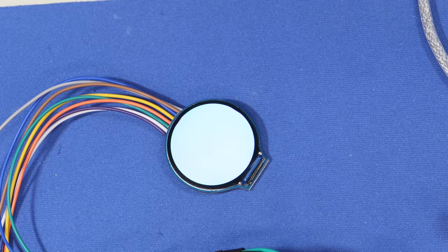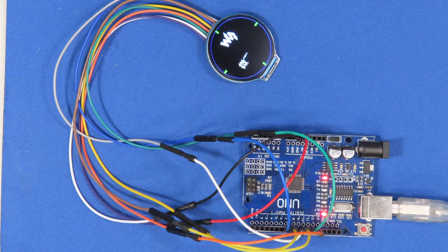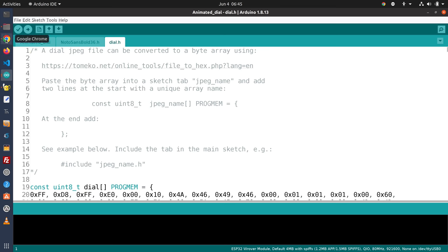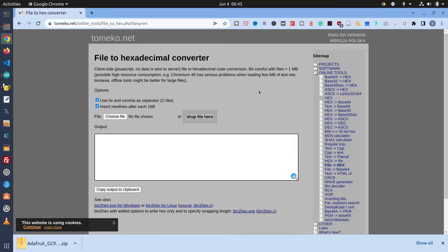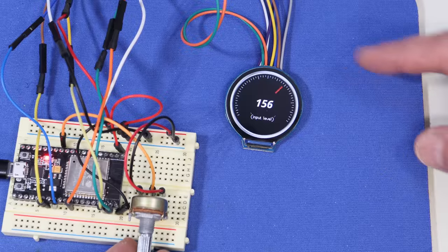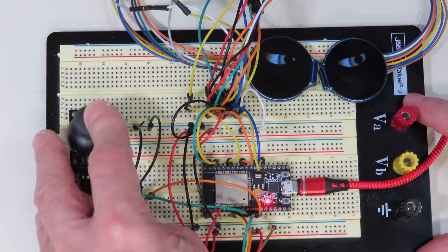Today in the workshop we're checking out a circular LCD display module. We'll see how we can use the GC9A01 display with both an Arduino Uno and an ESP32. We'll also build an indicator dial and a pair of animated eyeballs.